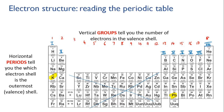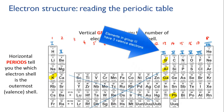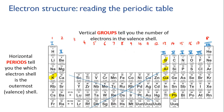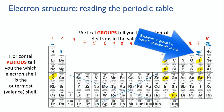So for instance, boron, aluminium and gallium are all in group 3 — they each have three electrons in their outermost shell. While fluorine, chlorine and bromine are in group 7 — they all have seven valence electrons.